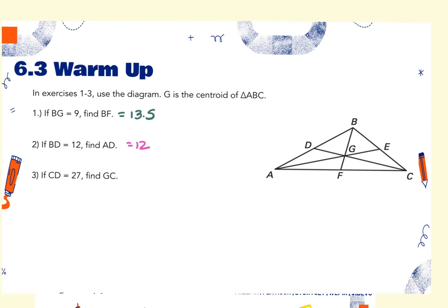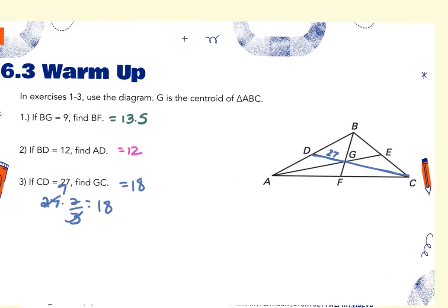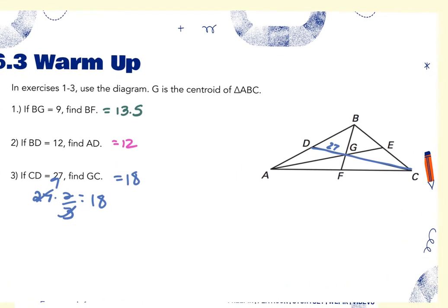The last one says CD — the whole segment — is 27, and it wants you to find GC. That's 18, because two-thirds of 27 is 18. If it had asked for GD, then it would be 9. So it just depends on what it's asking for — from the vertex to the point is two-thirds the whole thing.